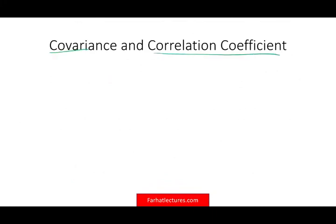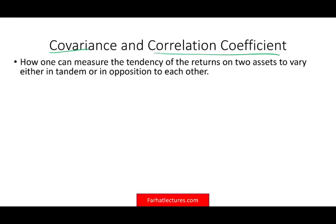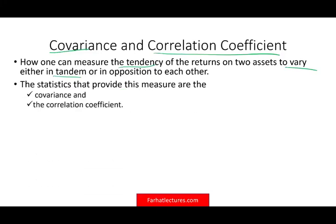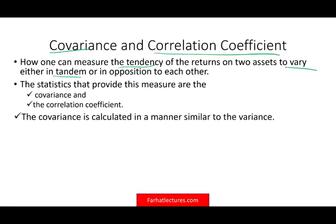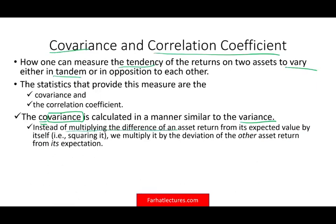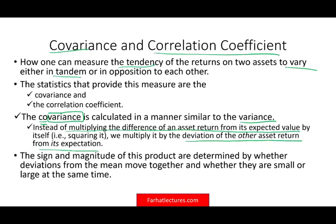Now we want to know how to measure that relationship. We can measure the tendency of returns on two assets to vary in tandem or in opposition using two statistical measures: covariance and the correlation coefficient. The covariance is computed similar to the variance, except instead of squaring the deviation of one asset's return from its expected value, we multiply it by the deviation of the other asset's return from its expectation. The sign and magnitude of this product determine whether the deviations from the mean move together and whether they are small or large.